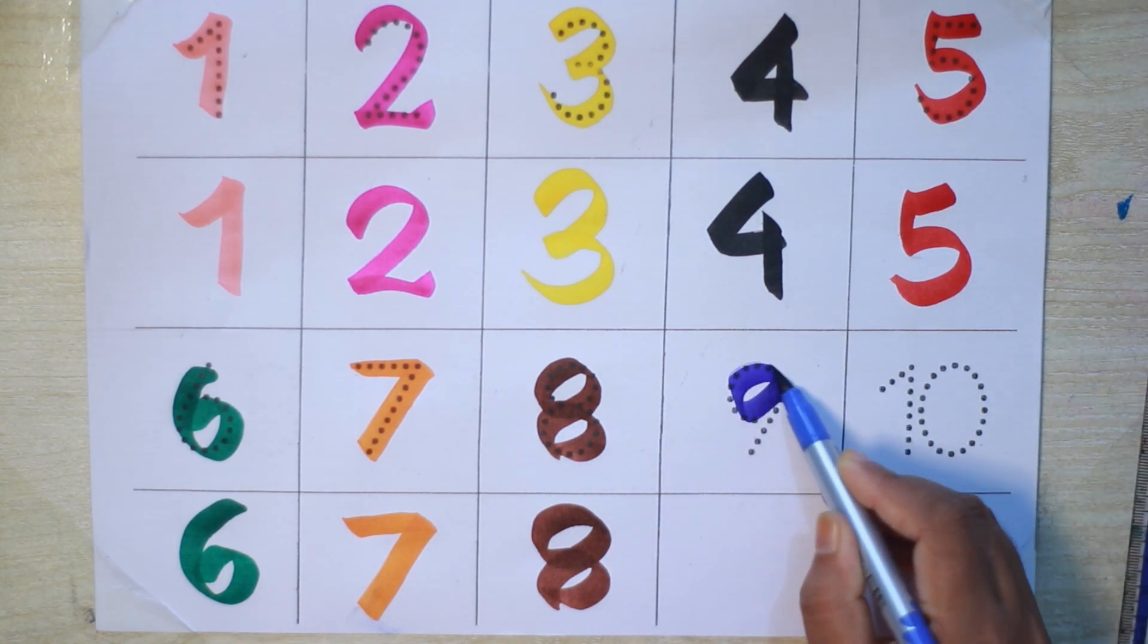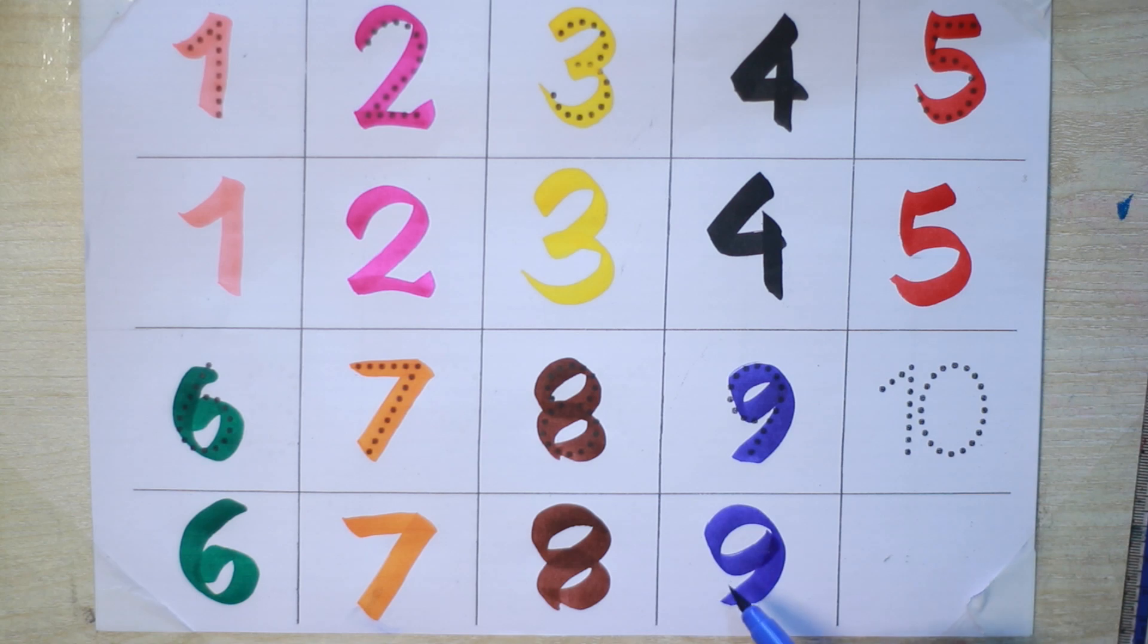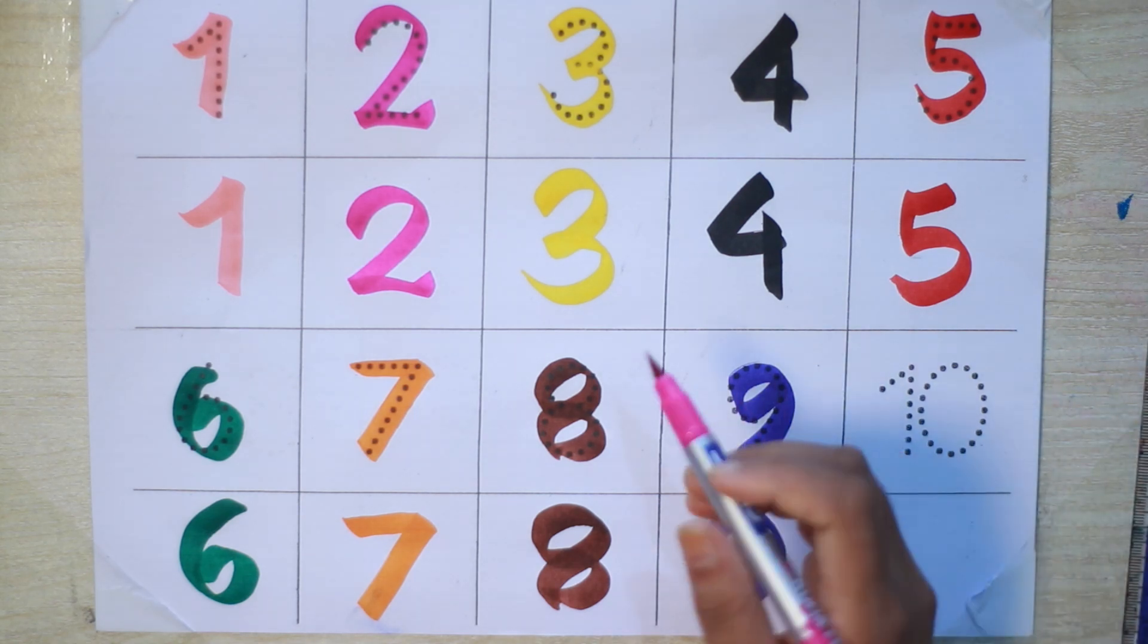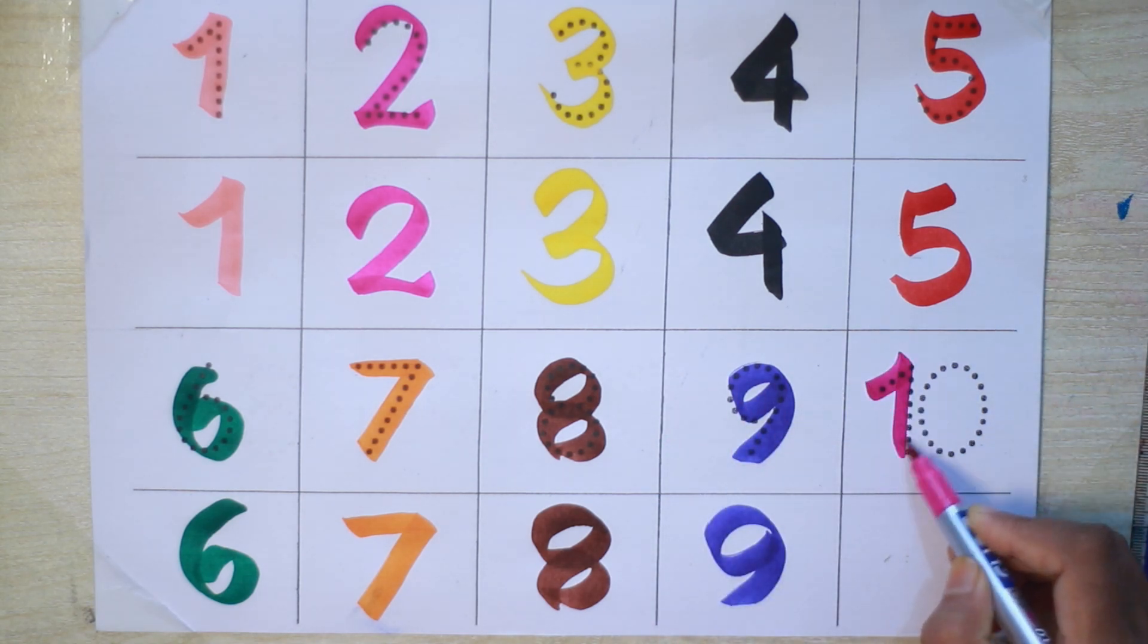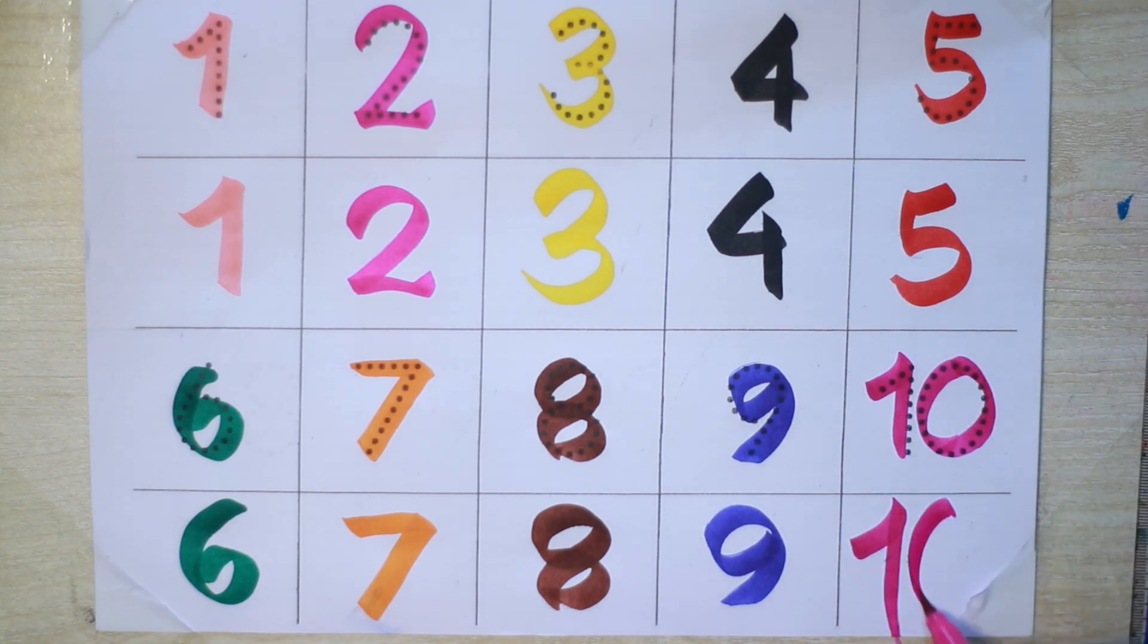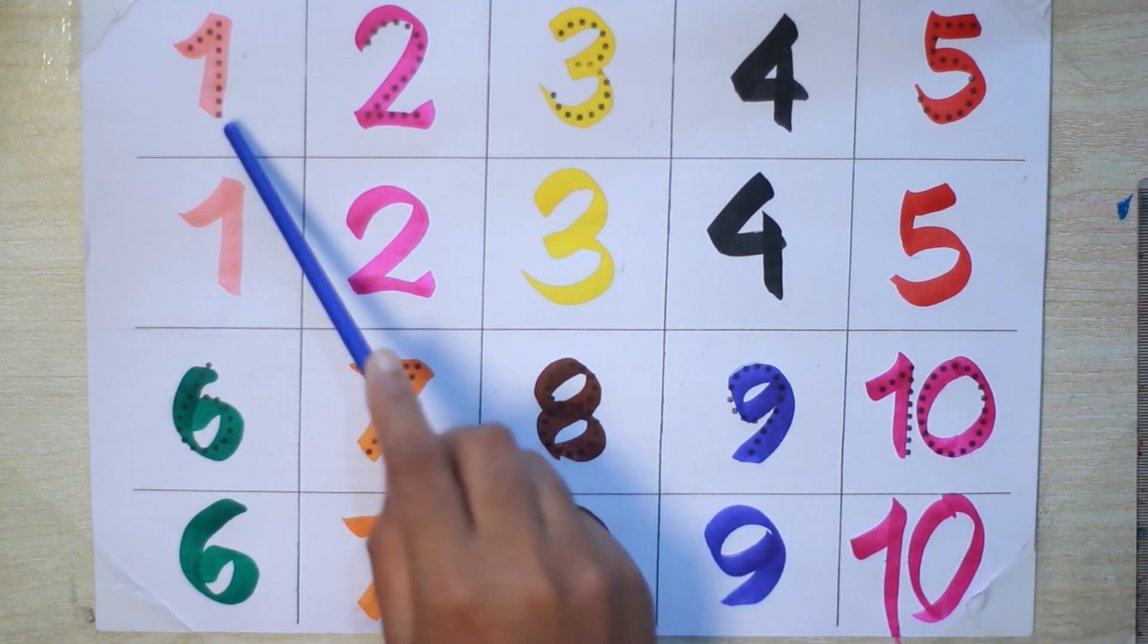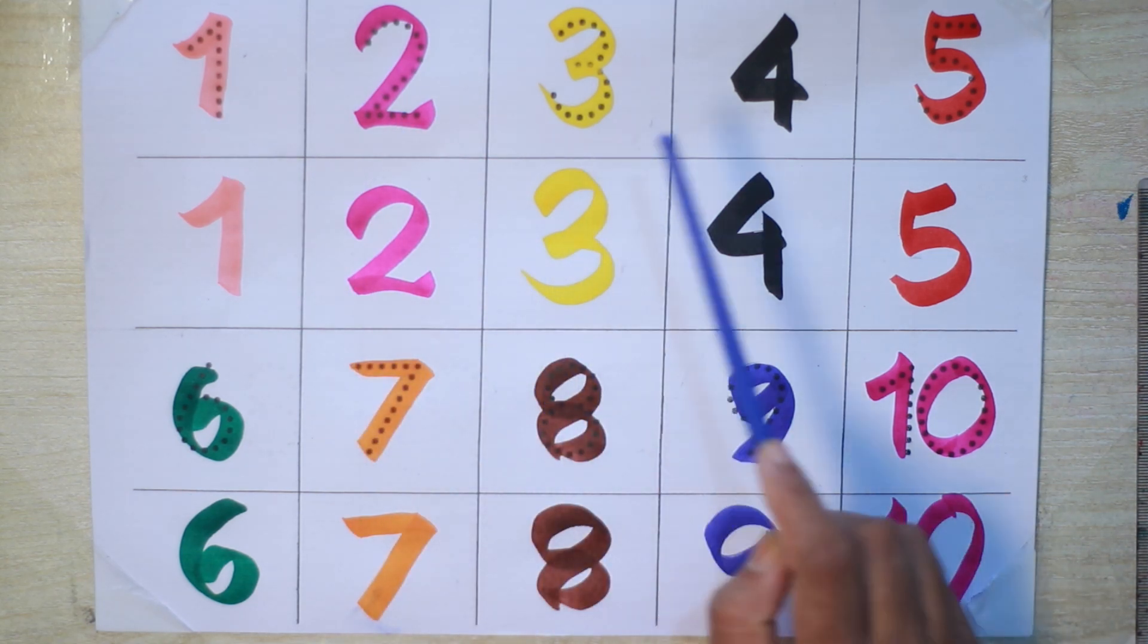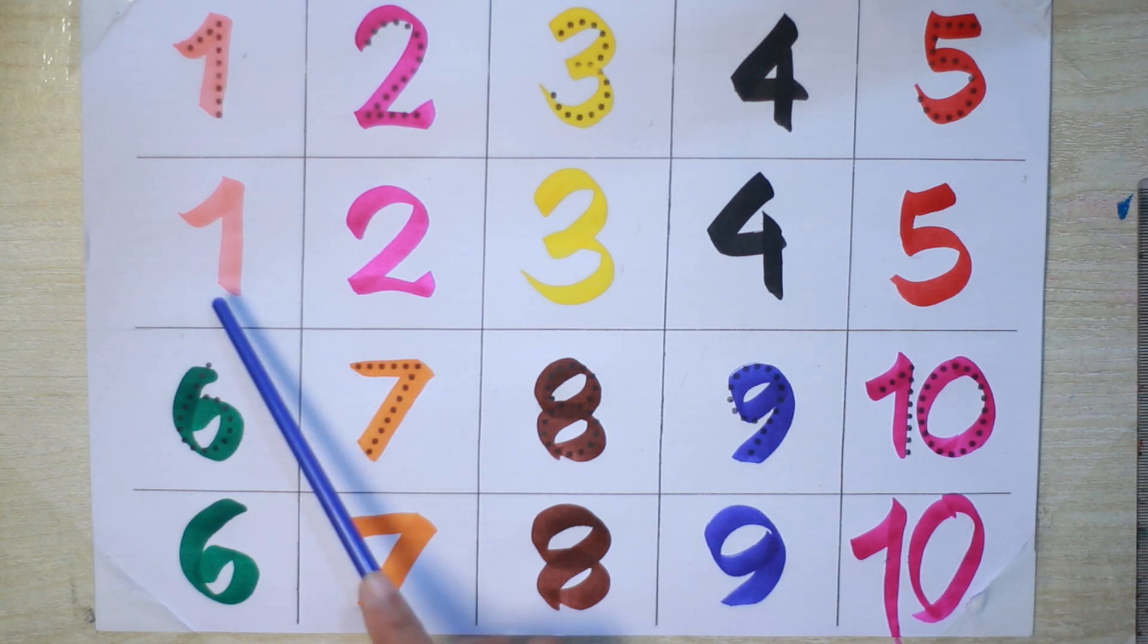Blue color nine, nine, nine. Pink color ten, ten, ten. Let's say again: one, two, three, four, five, six...